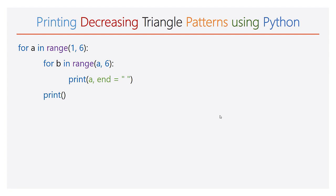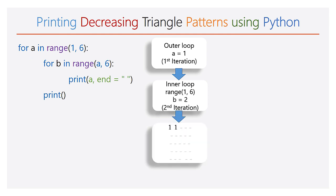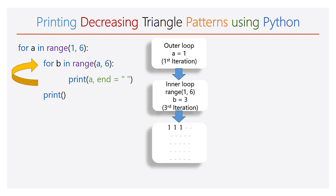Step by step we will look at how the execution will proceed. During the first iteration, the value of a will be 1 and the range of b is 1 to 6. With the range 1 to 6, the inner for loop will iterate 5 times. In the print function we have taken the variable as a. So during each iteration of the inner for loop, the number 1 will be printed in the output. So totally there are 5 ones in the first line.